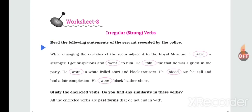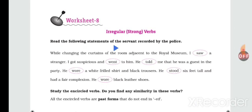Let us read the following statements of the servant recorded by the police. While changing the curtains of the room adjacent to the royal museum, I saw a stranger. I got suspicious and went to him. He told me that he was a guest in the party. He wore a white frilled shirt and black trousers. He stood six feet tall and had a fair complexion. He wore black leather shoes.